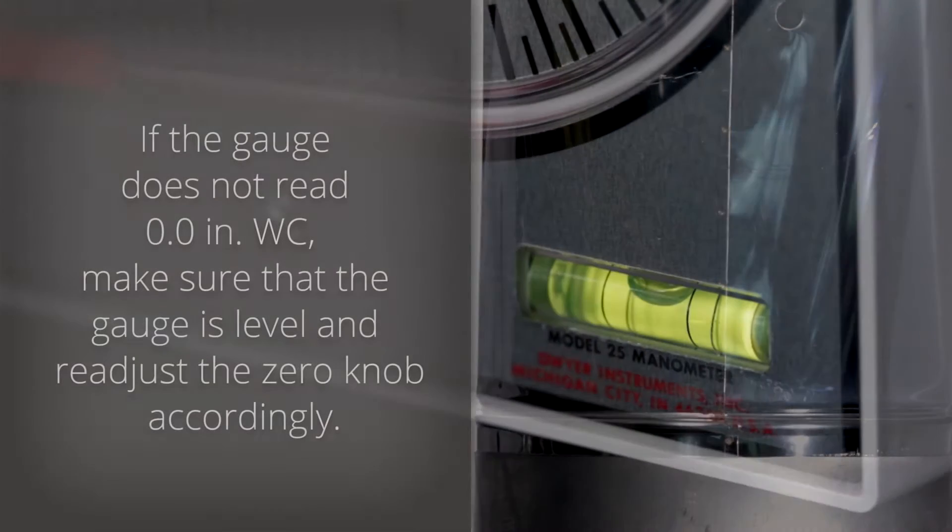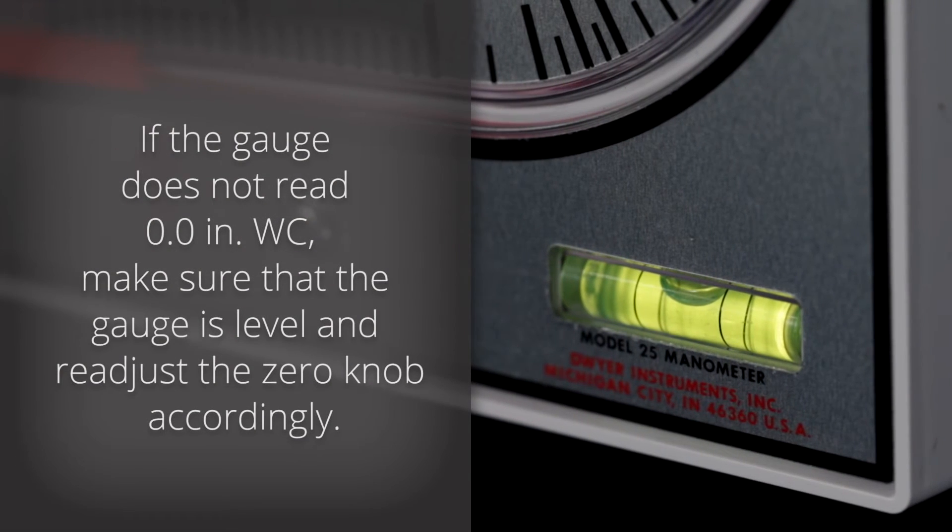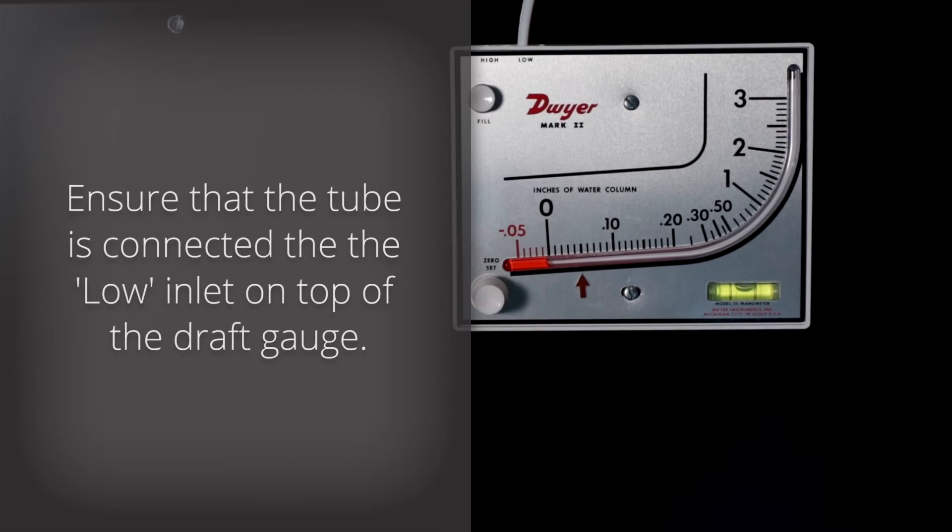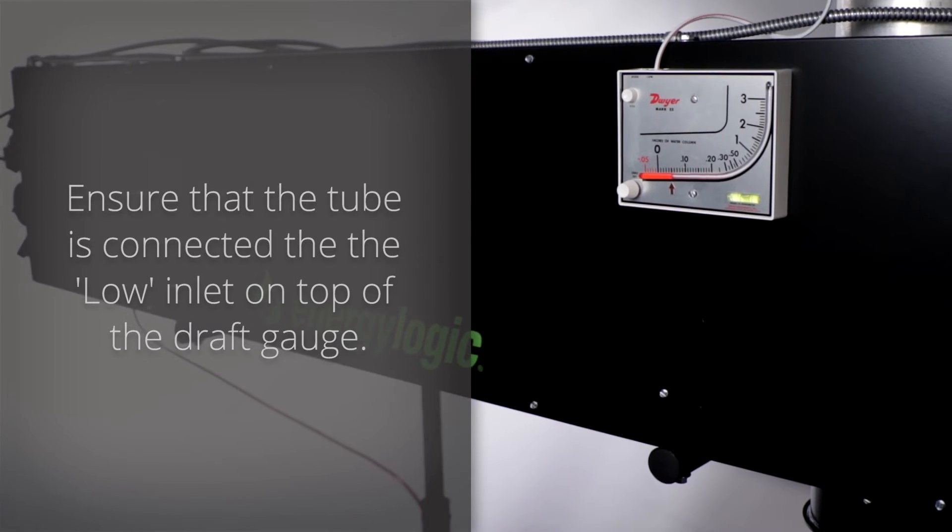If the gauge does not read 0.0 inches of water column, make sure that the draft gauge is level and readjust the zero knob accordingly. Ensure that the tube is connected to the low inlet on top of the draft gauge.